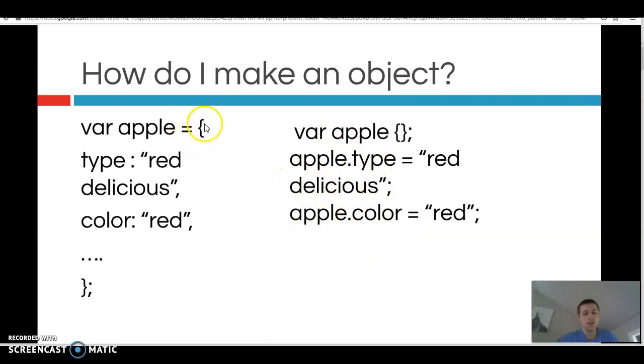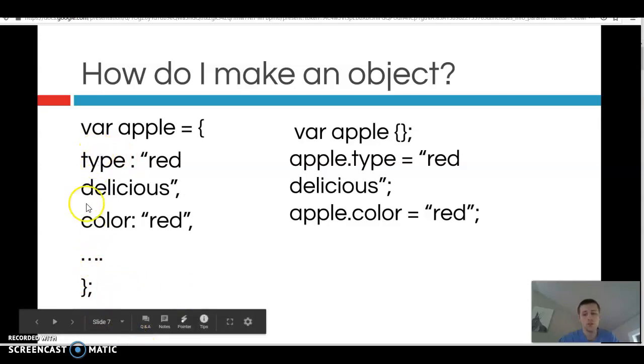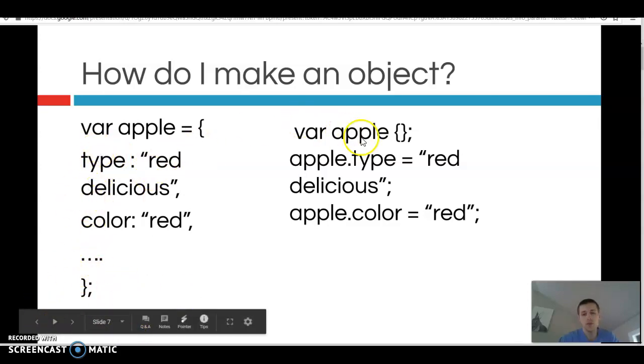So inside the curly braces, if we wanted to give it some properties, we could say property, let's say type. And then you do a colon followed by what definition you want to give that type. And that could be a string or it could be a number, any kind of information you'd like to associate with your apple. So it could do type, color, and as many as you want. Keep going for hundreds of lines here. Or you could do it this way, where you declare your object var apple equal. There we go. Equals, really important.